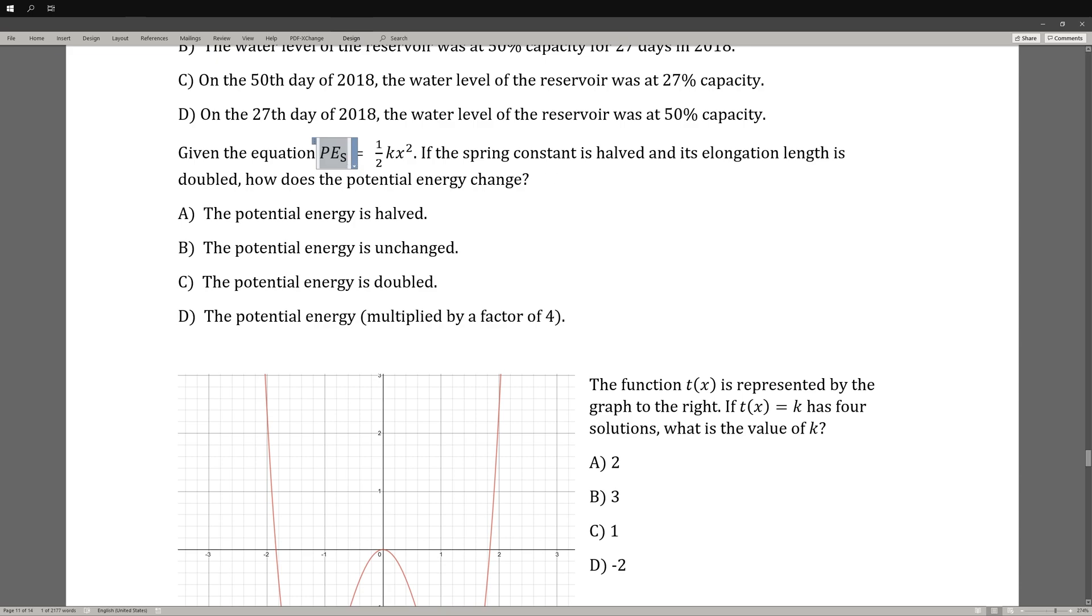However, if its elongation length is going to be doubled, x is squared. So in this case, we know that the PE, the potential energy, is going to increase by 4. So we have 4 times one-half and that's doubled. So the correct answer would be C.